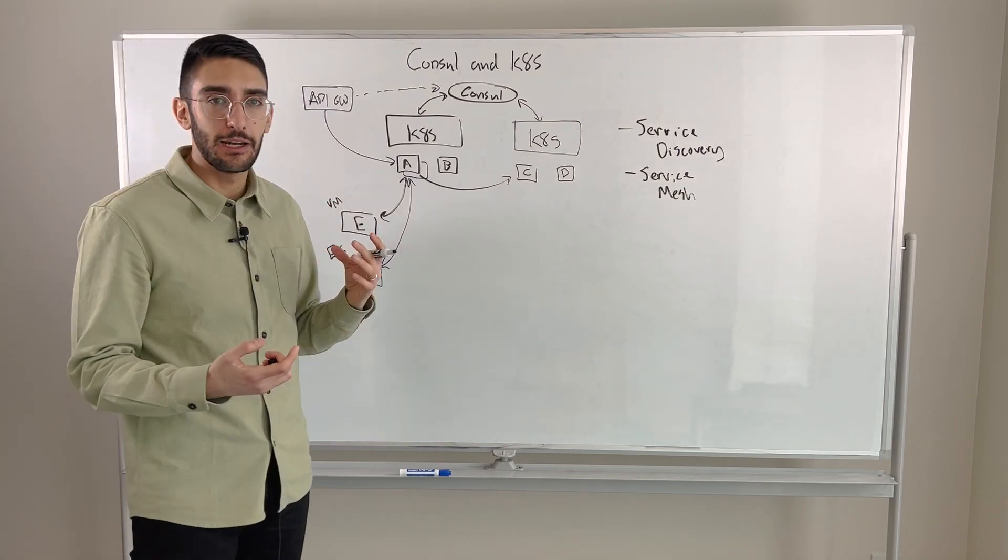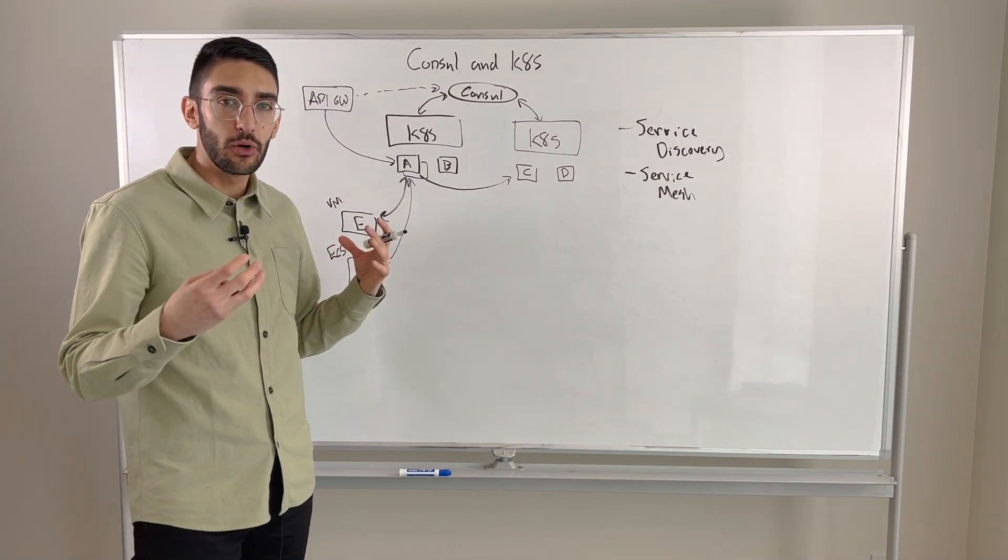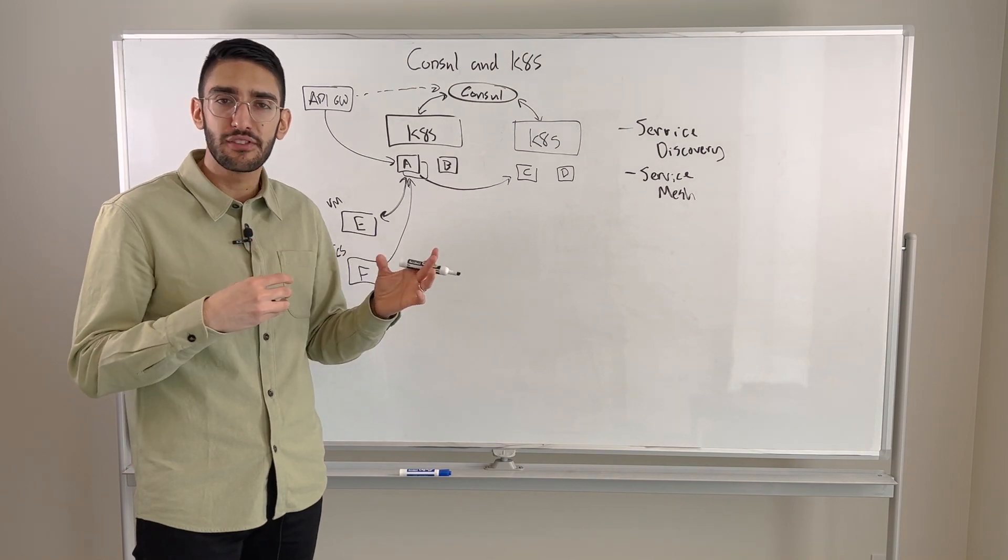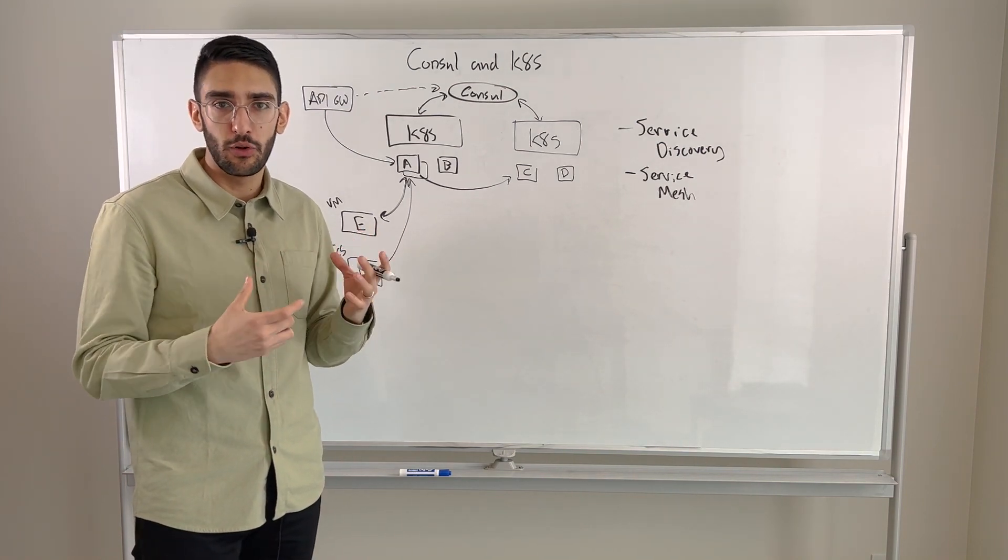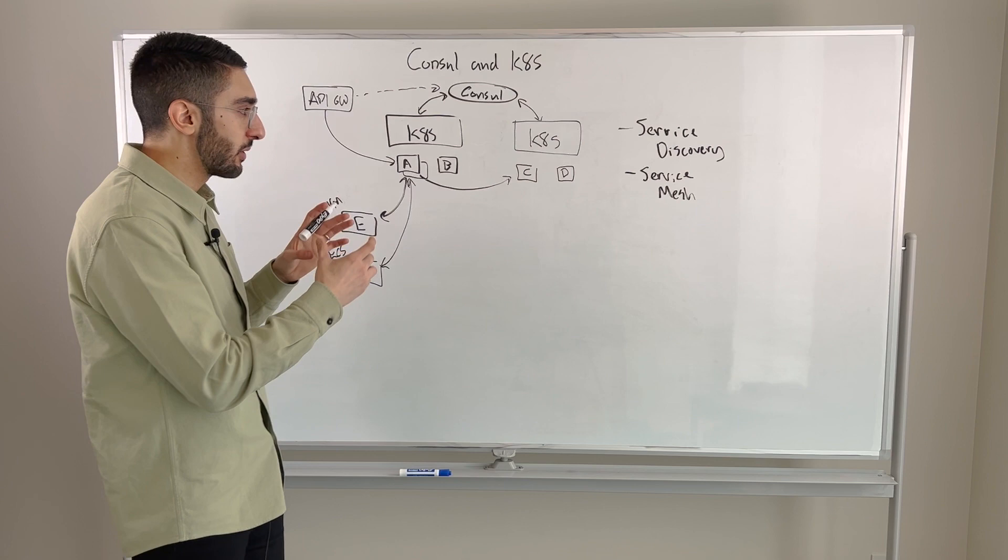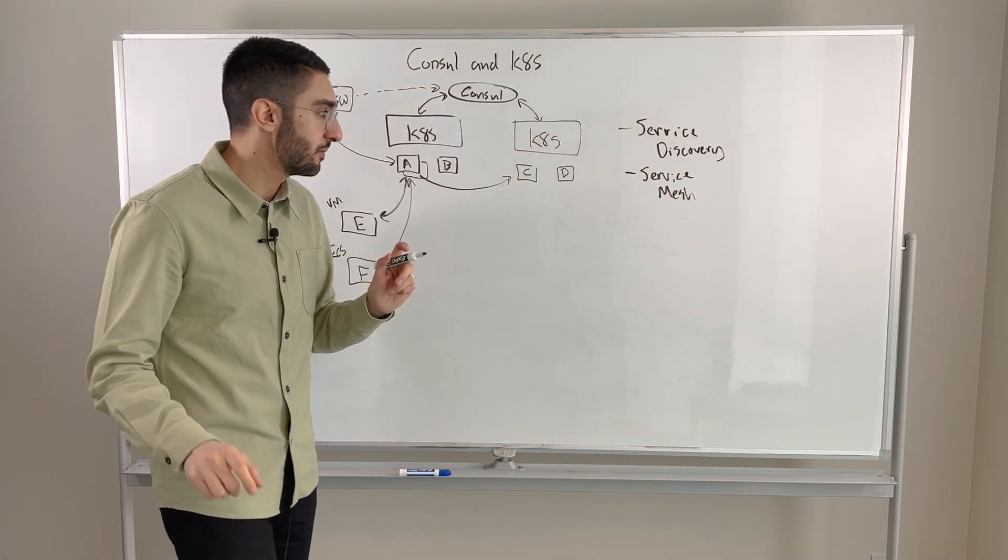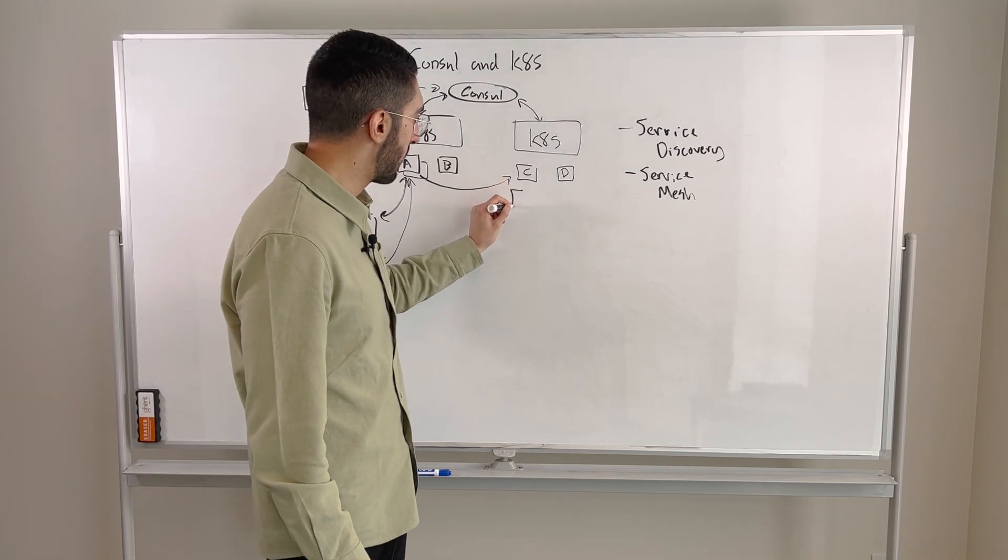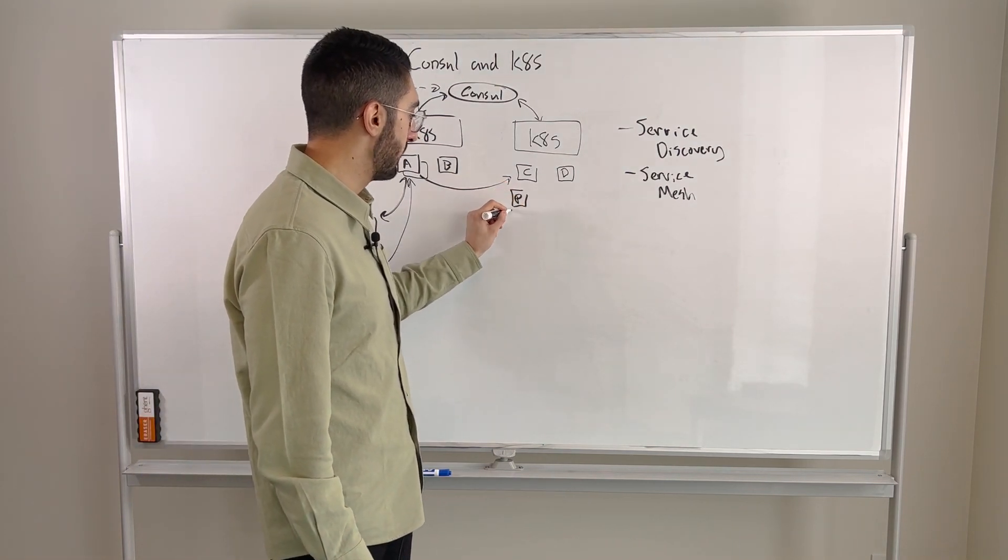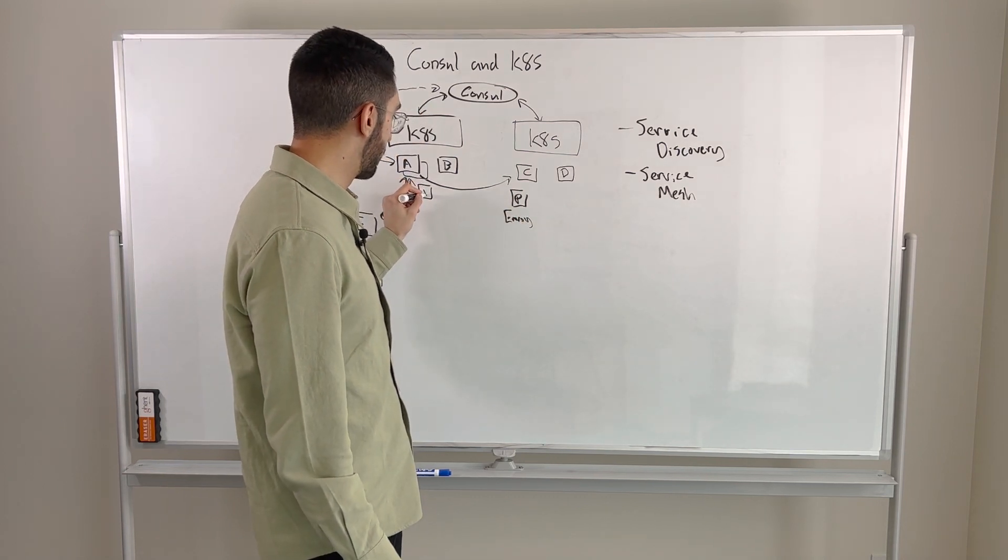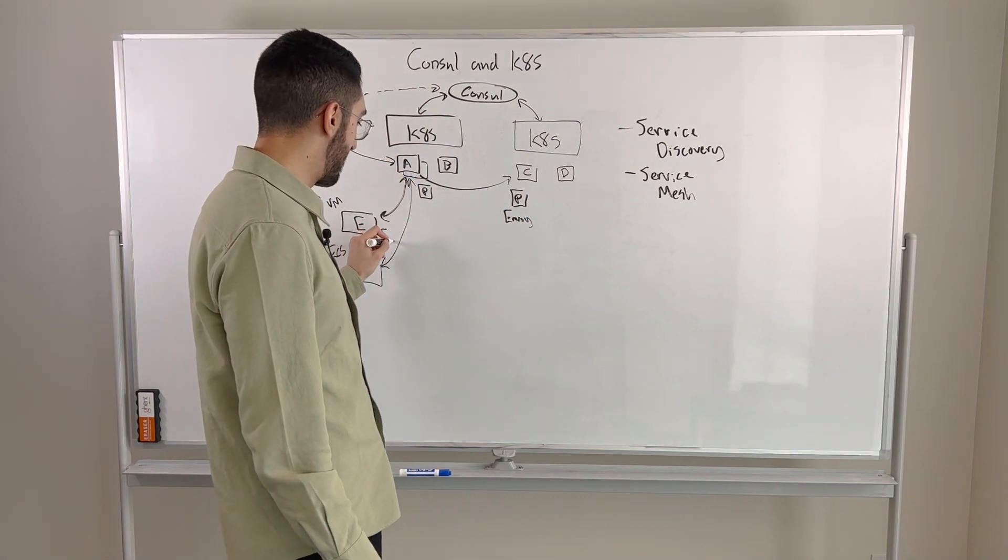Rather than us trying to push all the traffic through a central set of load balancers and firewalls and WAFs and all these sort of network middleware, instead, what we're doing is saying we're going to push a set of software proxies or sidecars to the edge. So alongside these applications, we're going to run a proxy, for example, Envoy. And these proxies are running sort of everywhere. They're alongside these various applications.